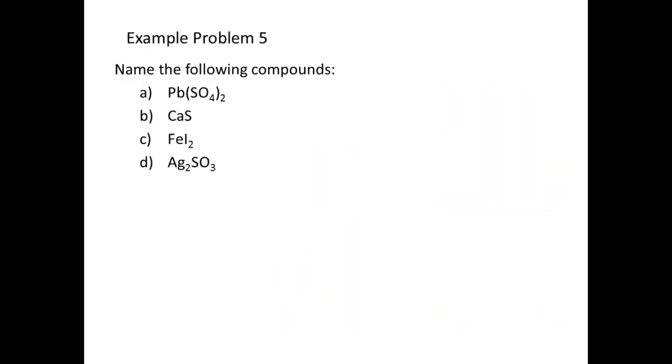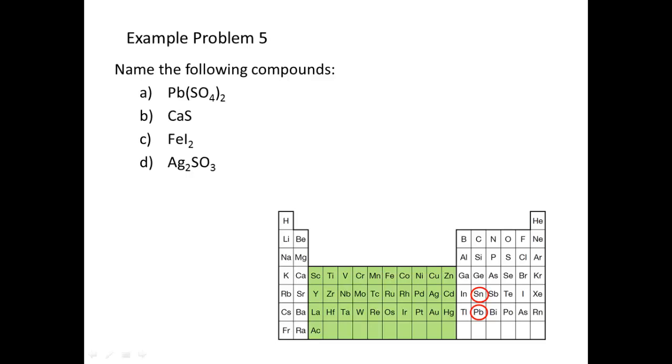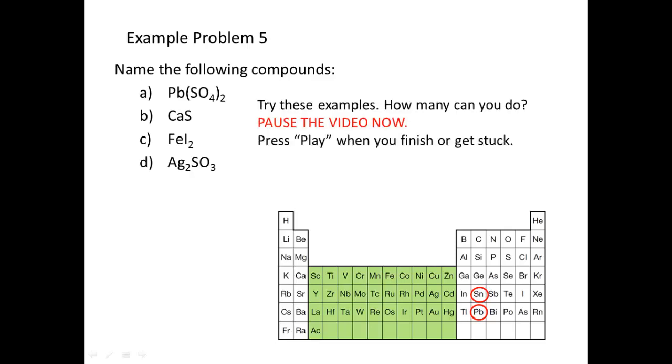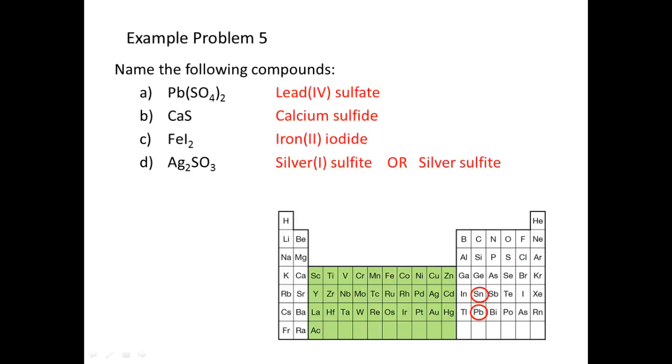I'd like you to give these four a try. You will need to notice which ones of these you will need a Roman numeral for and which you won't need a Roman numeral for. I have mixed them up. So, you're going to need to look at this periodic table. Remember that if your metal is in the green or if it's tin or lead, you're going to need to include a Roman numeral. Otherwise, you do not include a Roman numeral. So, give these four a try. Pause the video. And when you think you have them, press play.